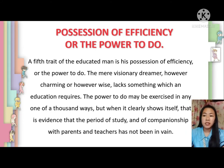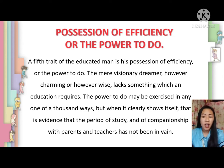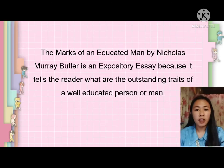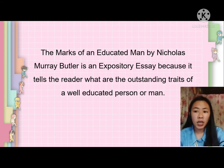The fifth and last trait of an educated man is his possession of efficiency or the power to do. The mere visionary dreamer, however charming or however wise, lacks something which education requires. The power to do may be exercised in any one of a thousand ways, but when it clearly shows itself, that is evidence that the period of study and companionship with parents and teachers has not been in vain. The essay entitled The Marks of Uneducated Man by Nicholas Murray Butler is an expository essay because it tells the reader what are the outstanding traits of a well-educated person.